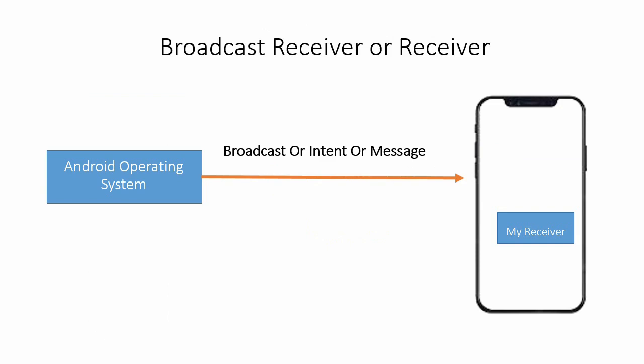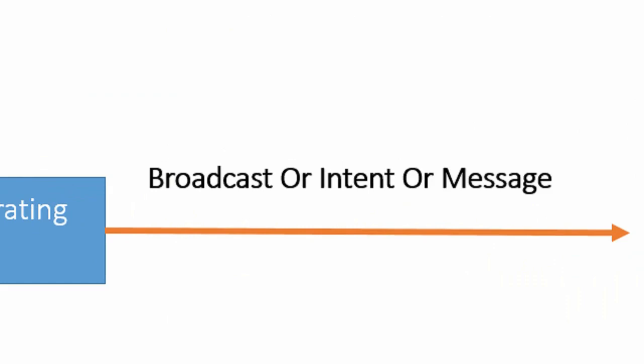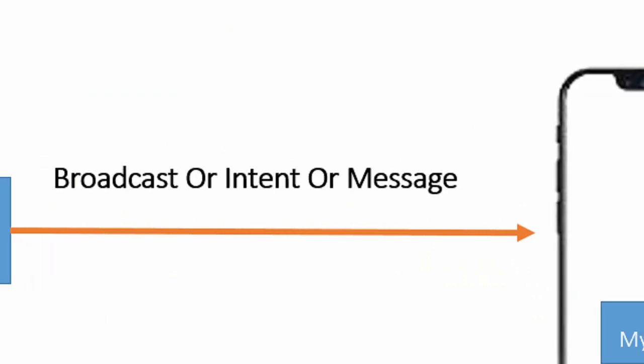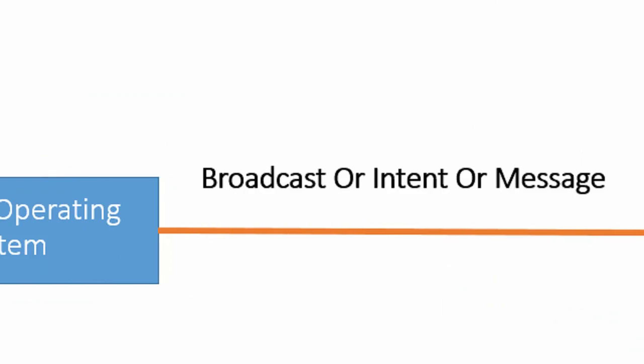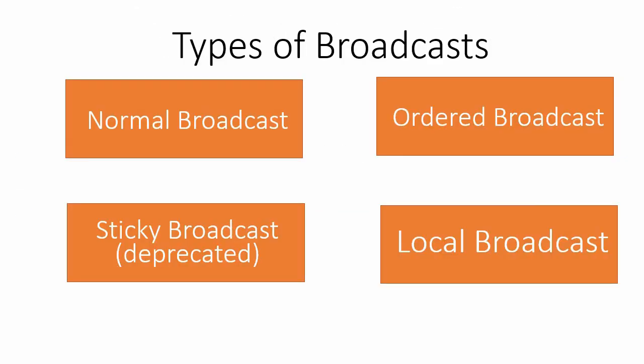Broadcast receivers can also be triggered by intents — the messages we send using intents in Android. For example, someone calling you or sending you a message — all of that is included in the broadcast receiver.